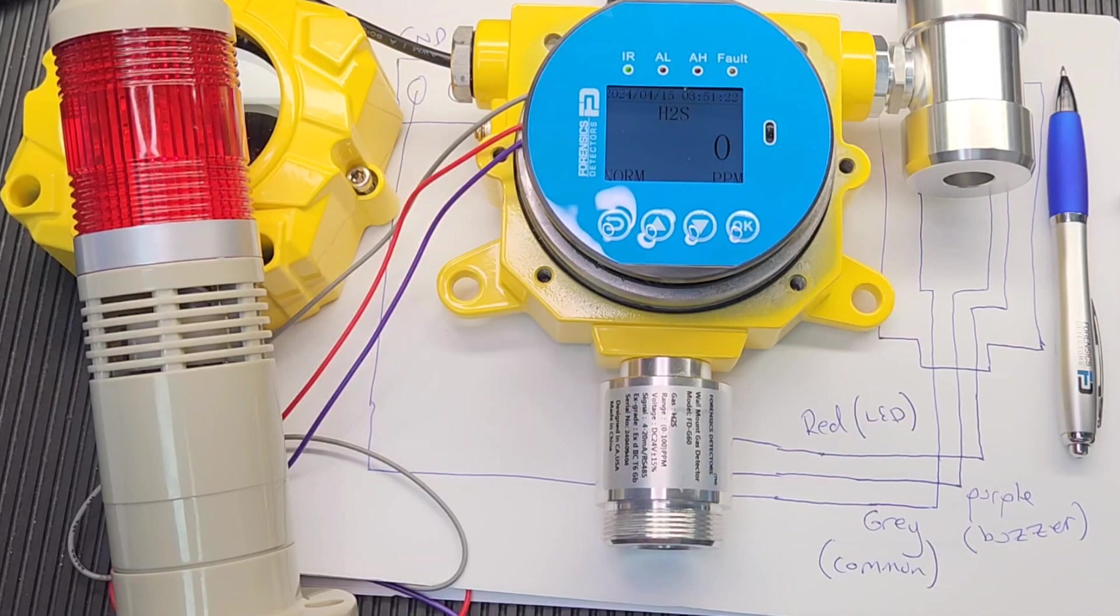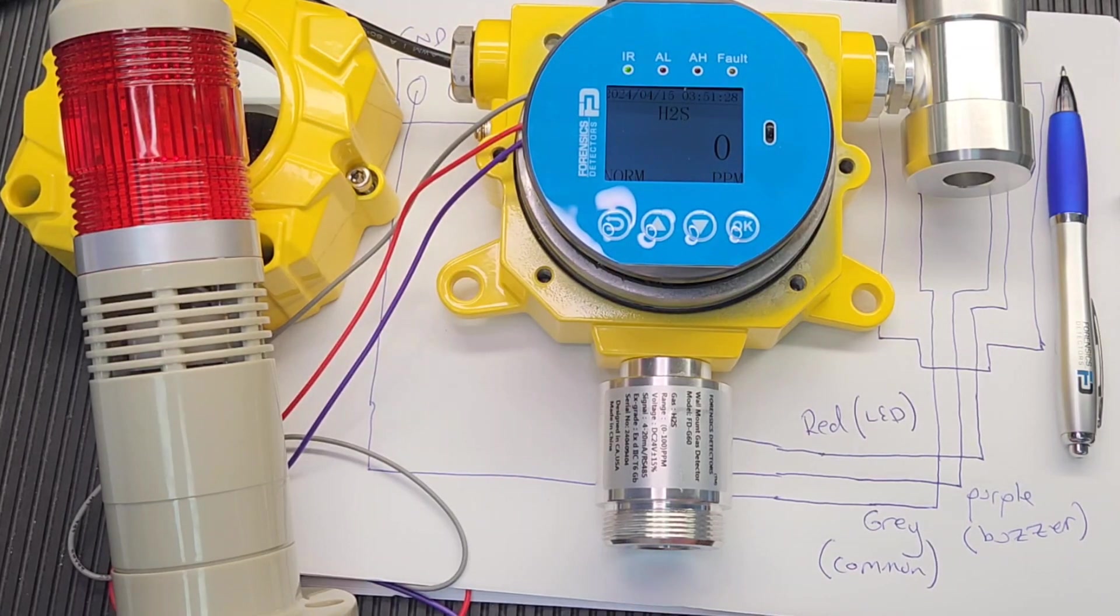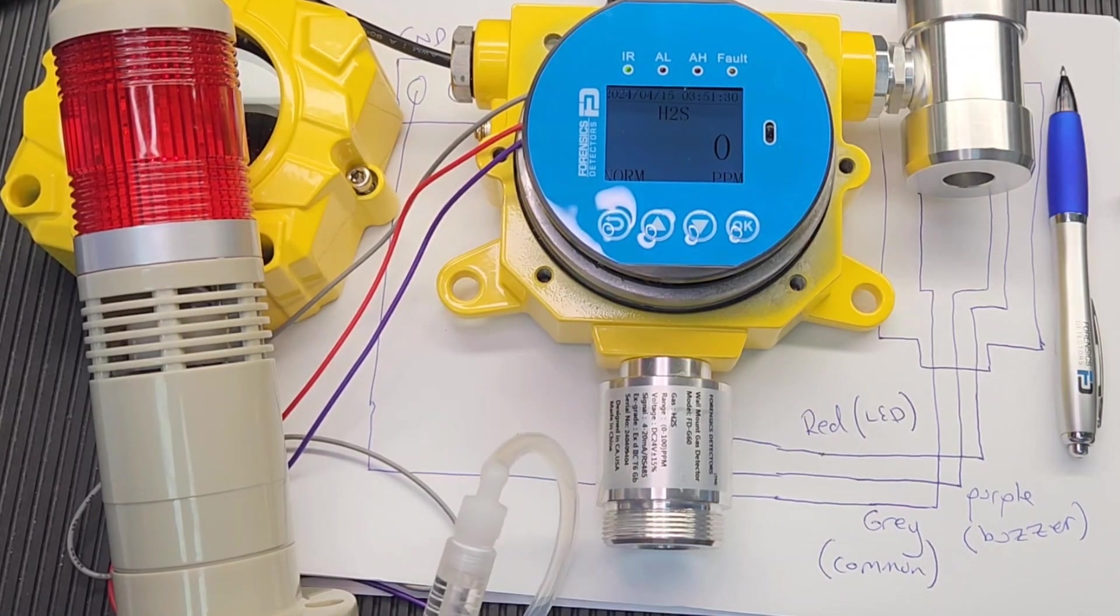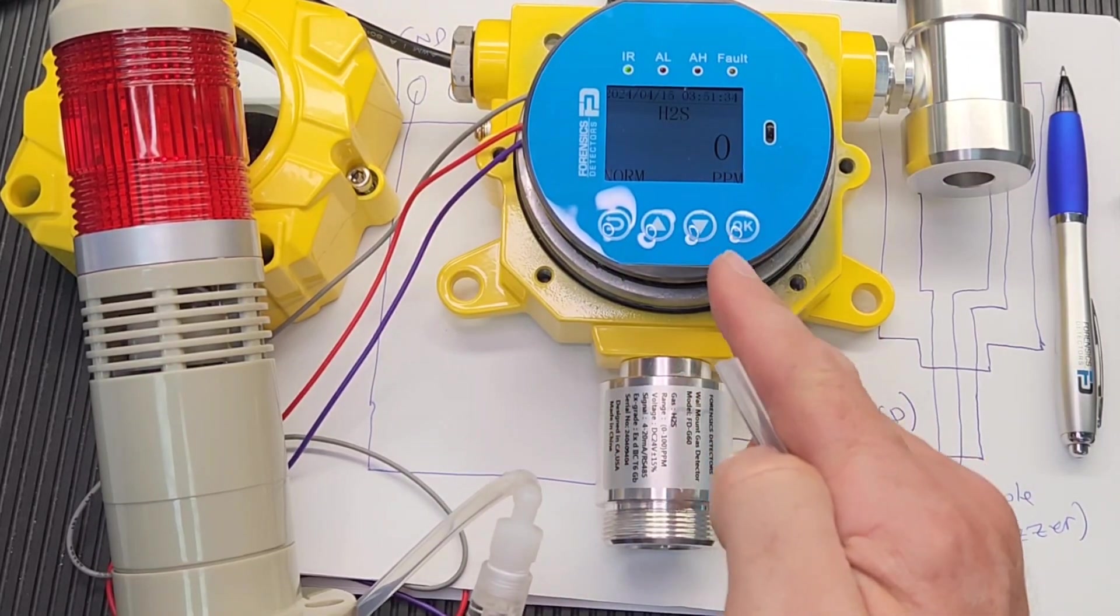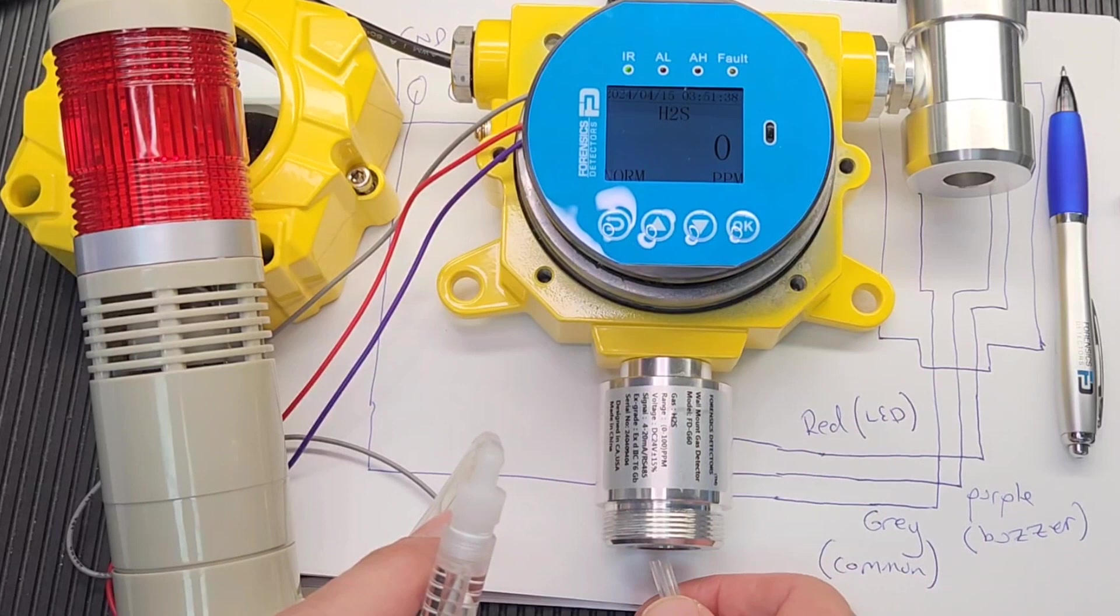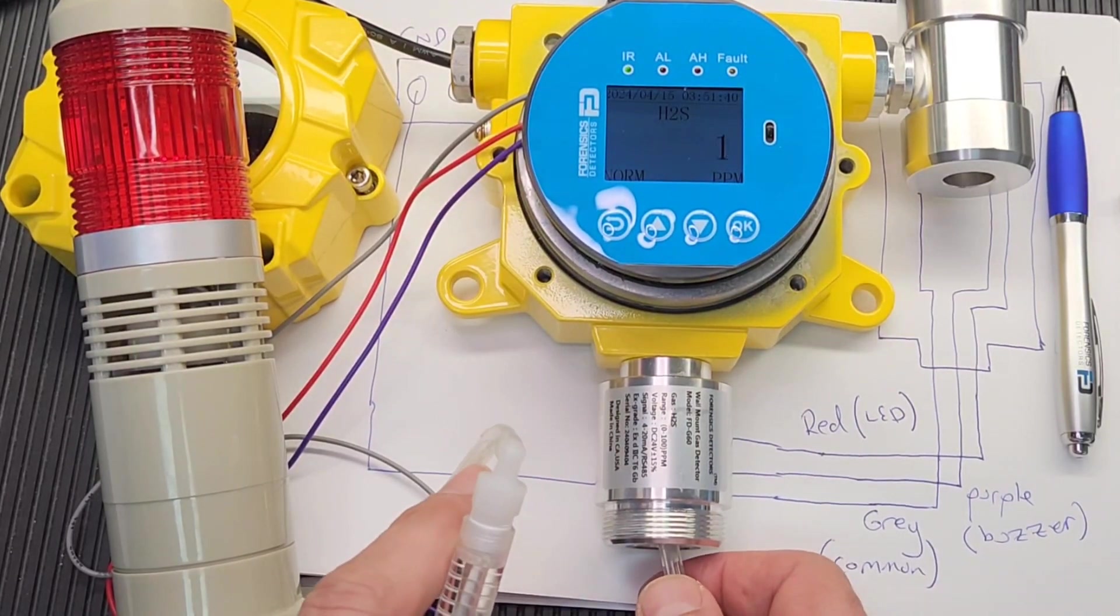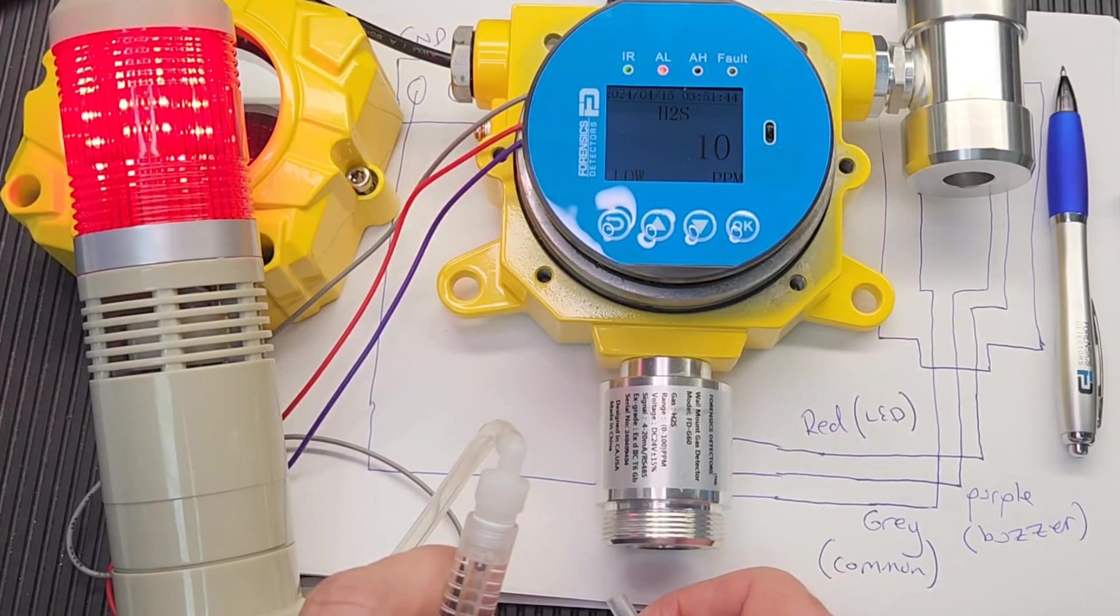Everything's connected. I have my gas bottle H2S. I'm going to give it a little blast, a little bump. We're going to see if everything works well. Both alarms should turn on once we exceed our low alarm level, which by default is 10 ppm. Just give that a little blast. Doesn't need much.